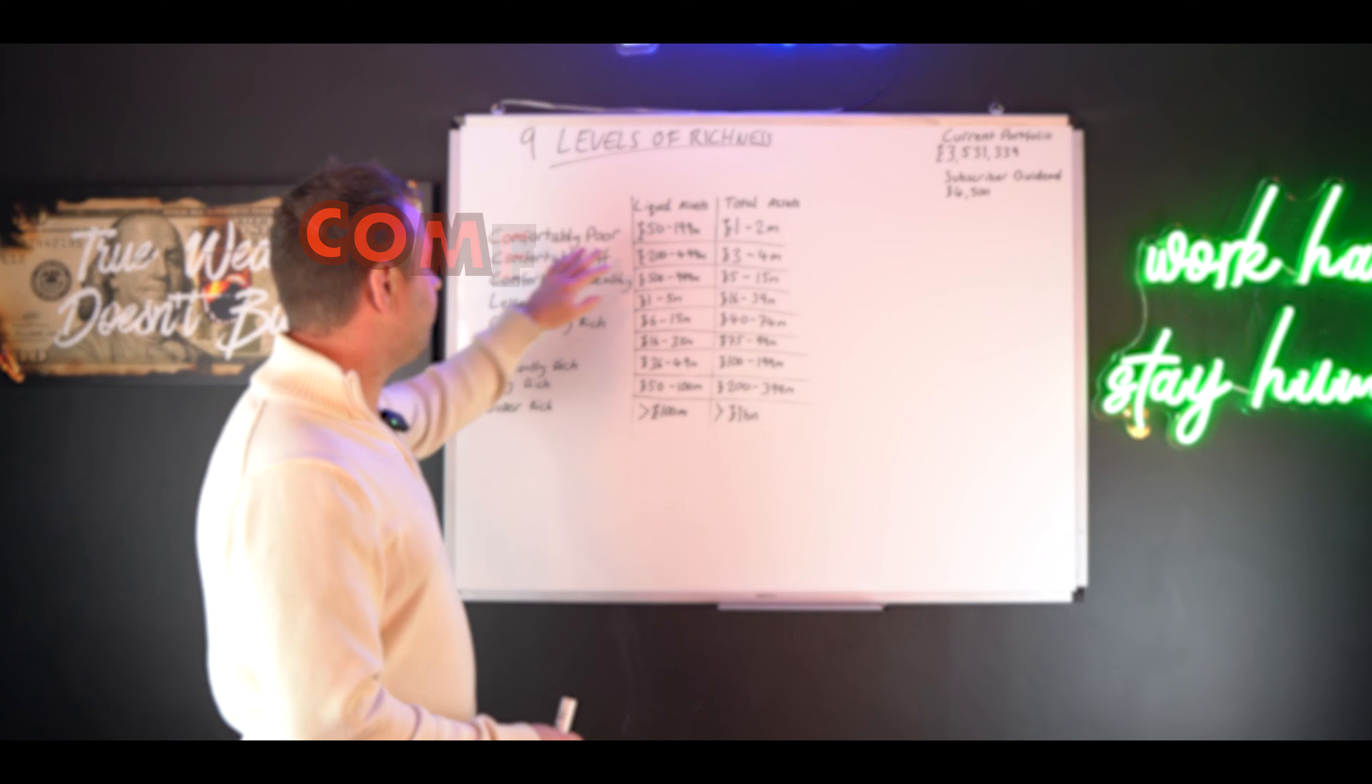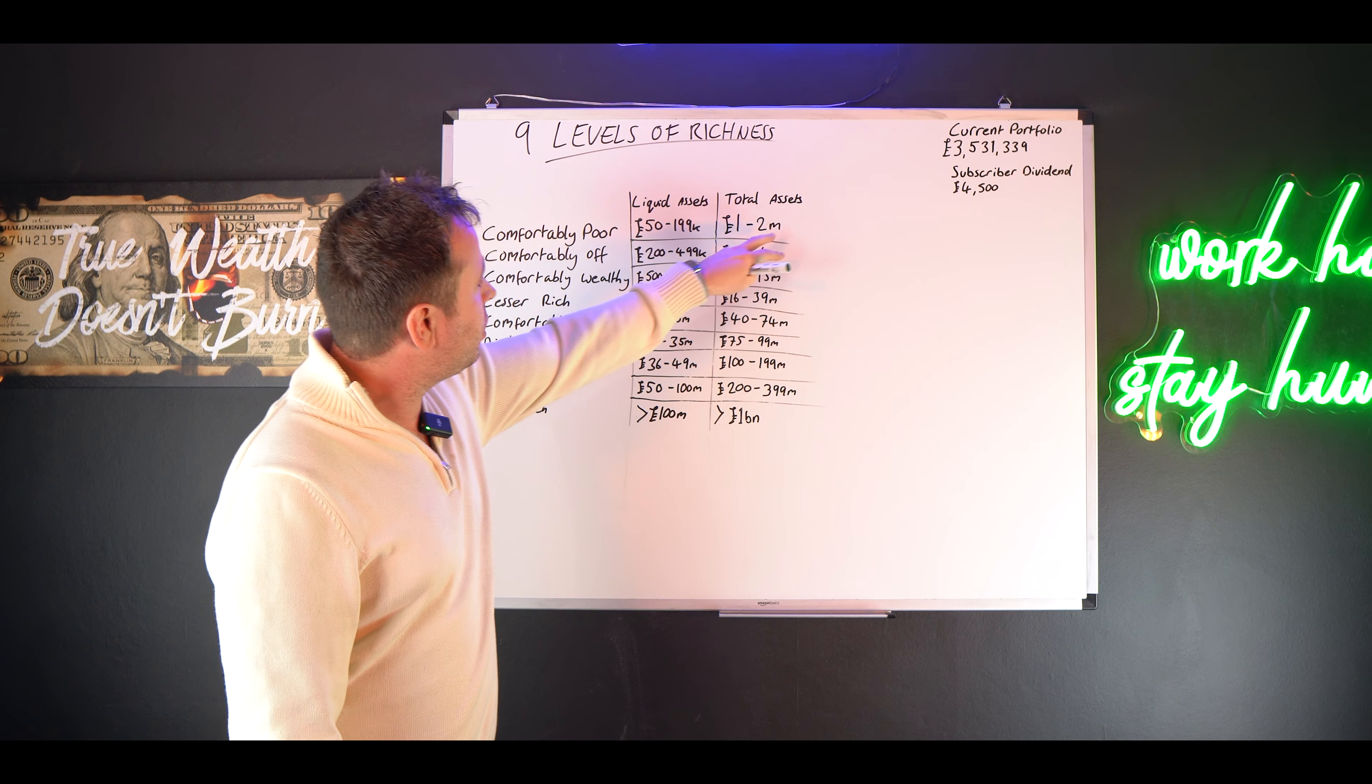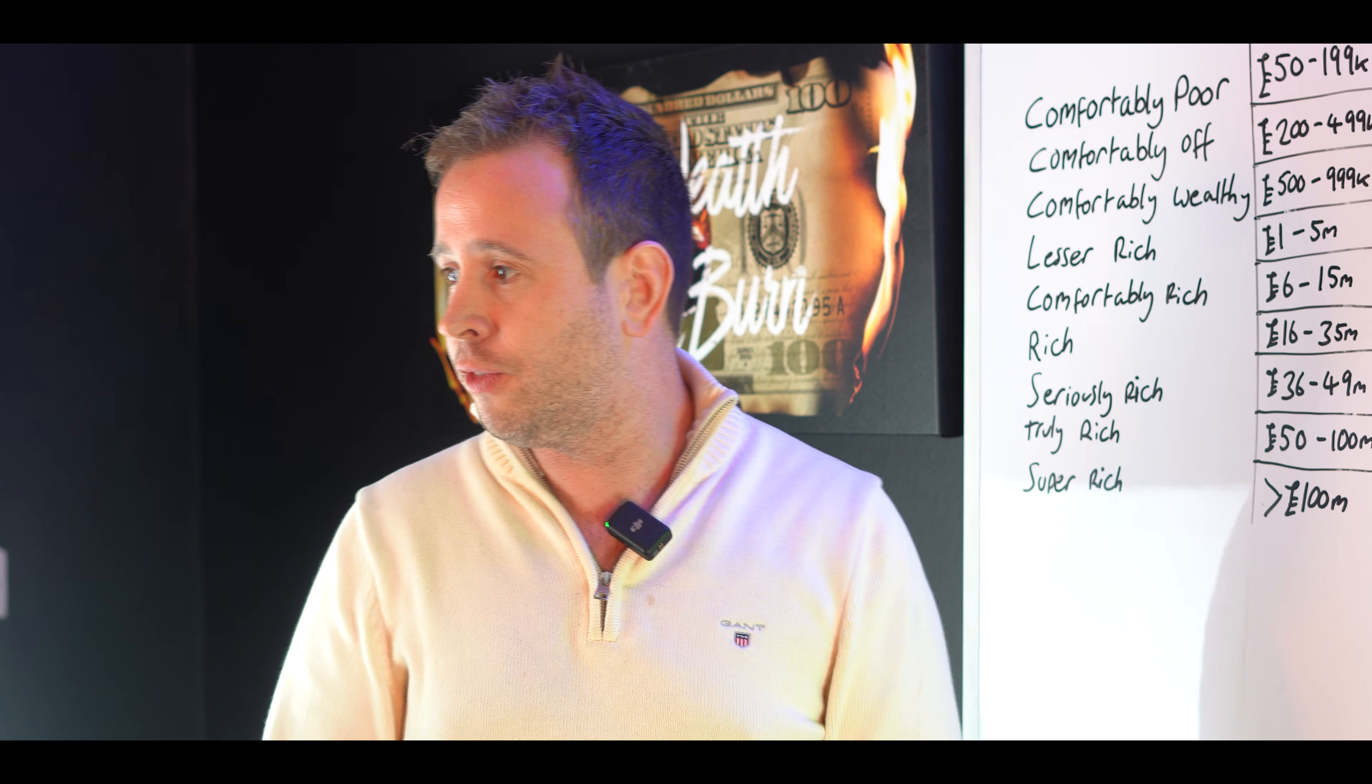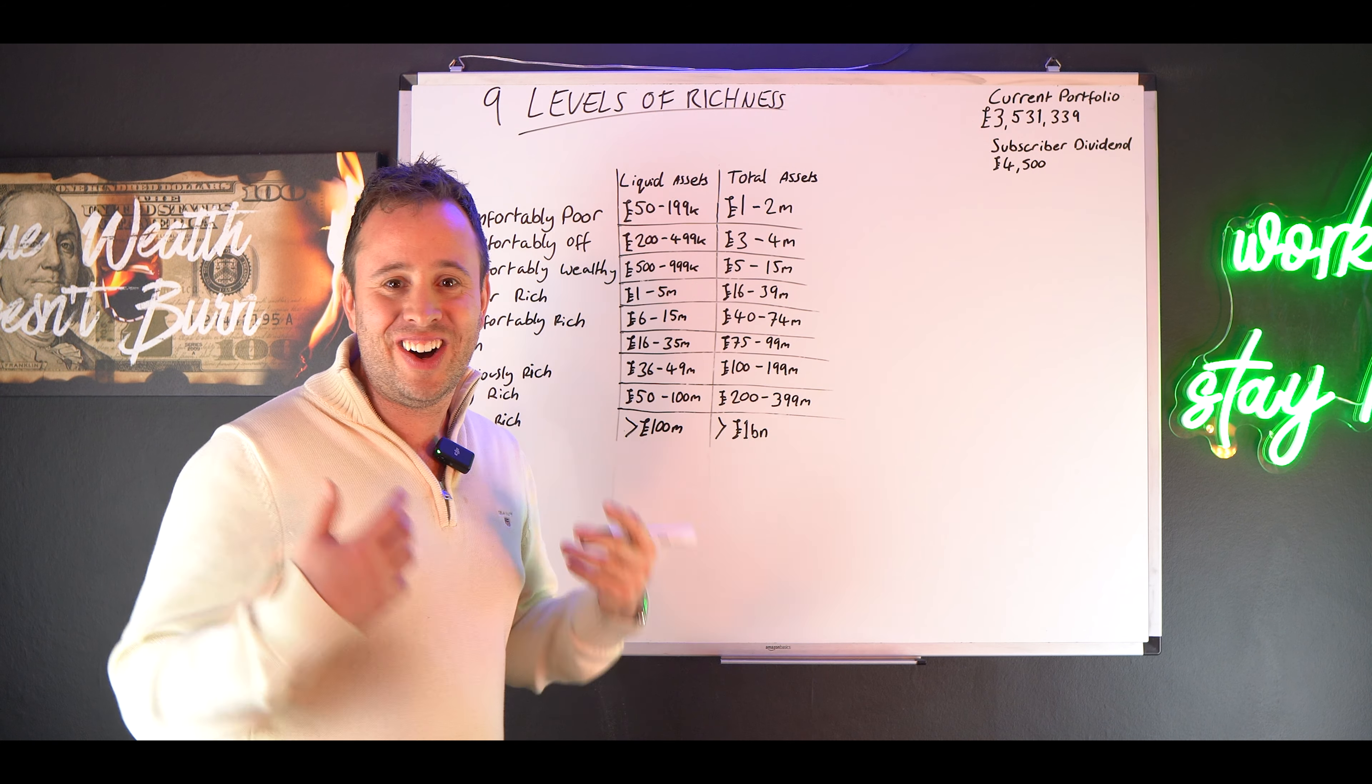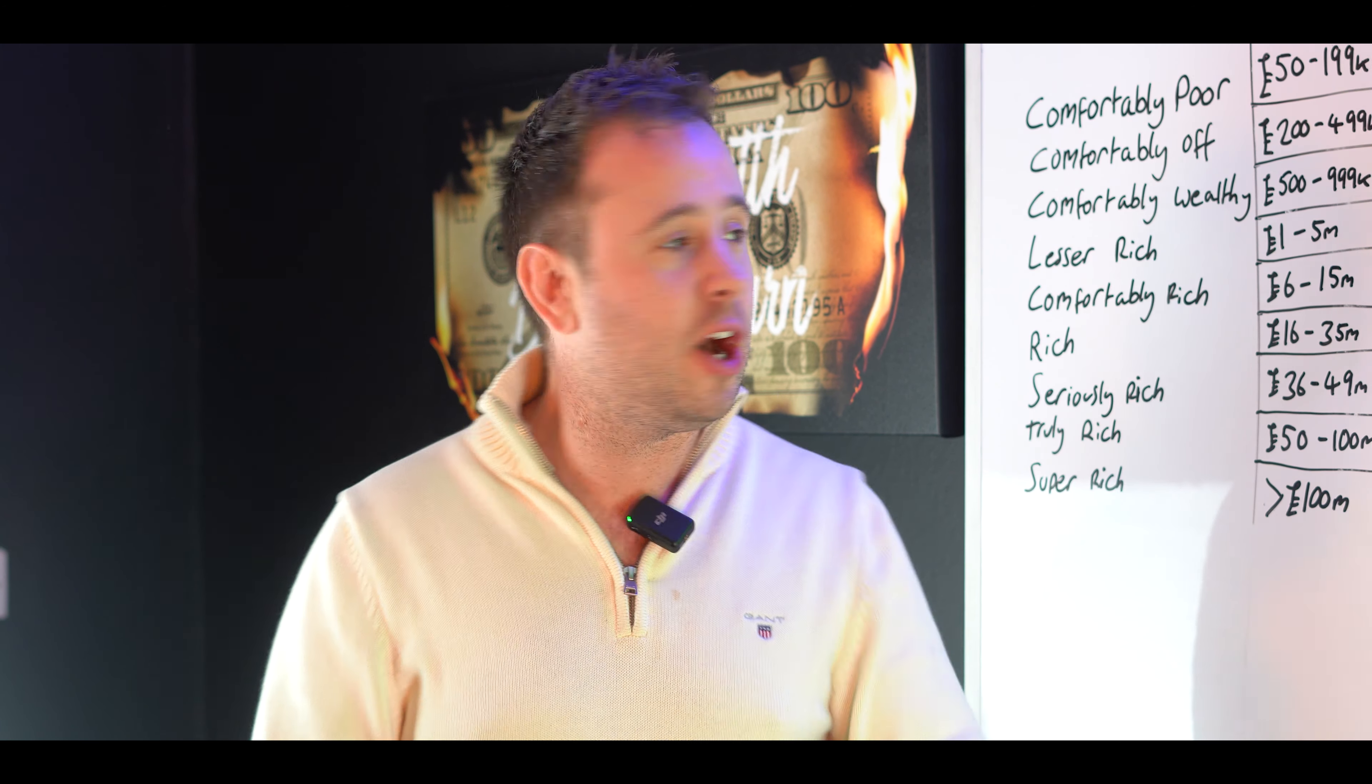The next level is comfortably off. I guess a take on well off. We're looking at 200k of liquid to 500k of liquid, and three to four million pounds of net worth. It's also important to say you could have more assets but less liquid assets and still not be comfortably poor. For example, if you had a home of two and a half million all paid off, no money in the bank and no job, you're probably uncomfortably poor. You can't do anything, you can't pay the bills, you can't eat. In Felix Dennis' book, he does say you have to have both aspects in order to be at that level.